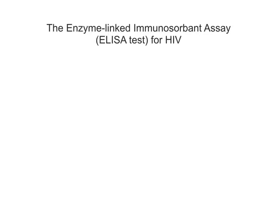So what we're going to start with is an antigen-coated well — excuse the rough drawing. We have some antigen attached to the bottom of this surface, so what we've got are HIV antigens attached to the surface of a plate. These little red dots are going to represent antigens, or more specifically HIV antigens.